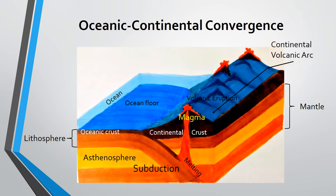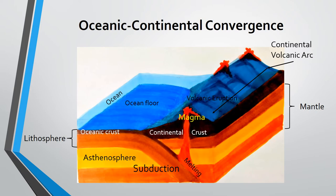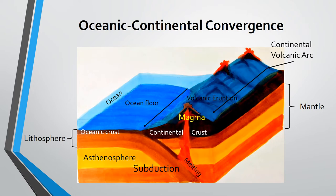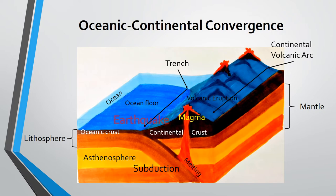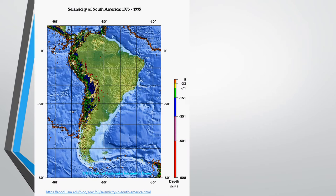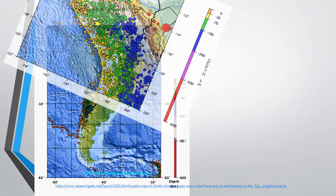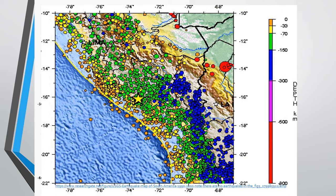A continental volcanic arc is a chain of active volcanoes formed in the continents. This formation could also rise to great heights and become mountain ranges. Parallel to this arc is the marginal trench. Trenches mark the subduction zone that is associated with large earthquakes. This figure depicts the seismicity in the western side of South America from 1975 to 1995. Along the continental margin, the record of earthquake epicenters is marked in orange, indicating that the earthquakes here were shallow with a depth of 33 kilometers.